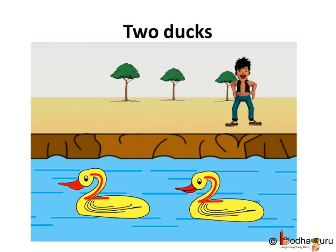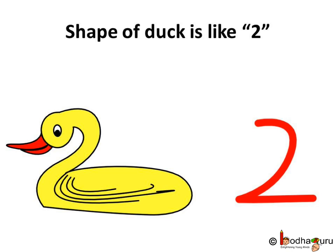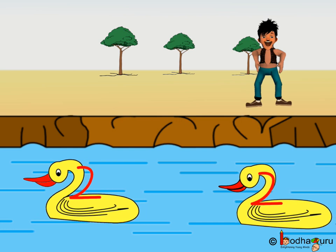How do we write two? You know, it is just like the shape of a duck. See?